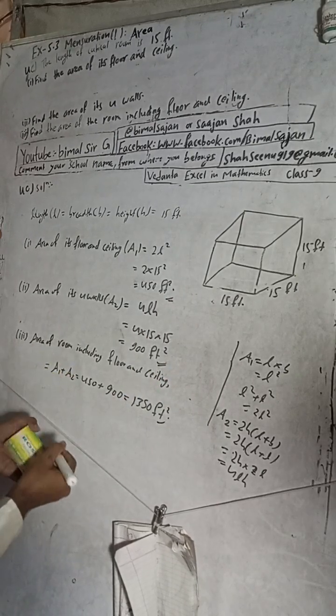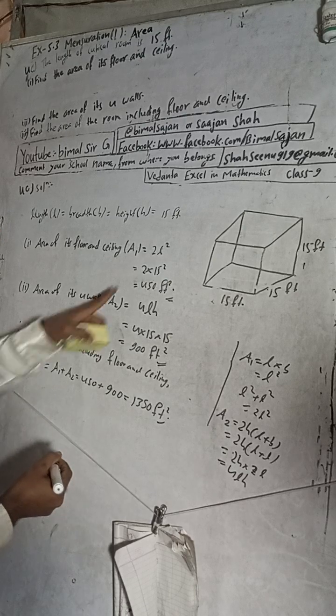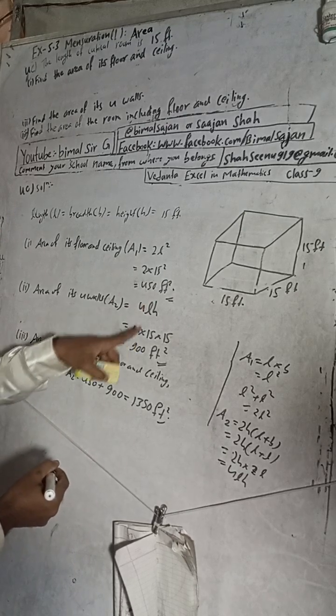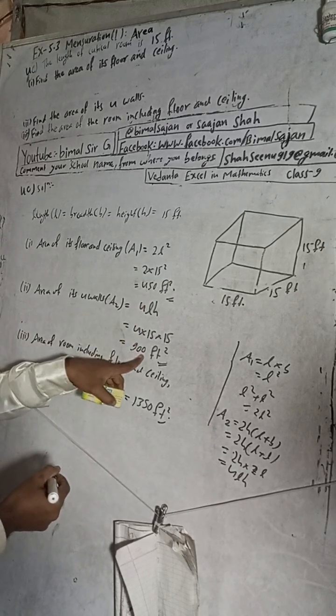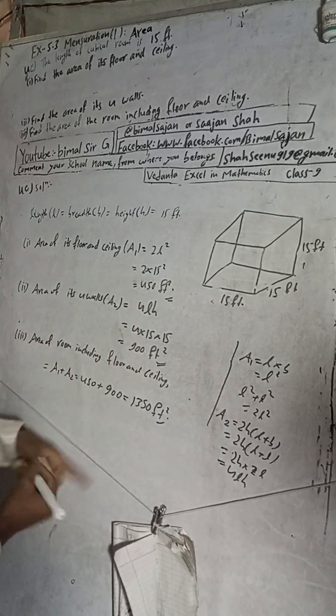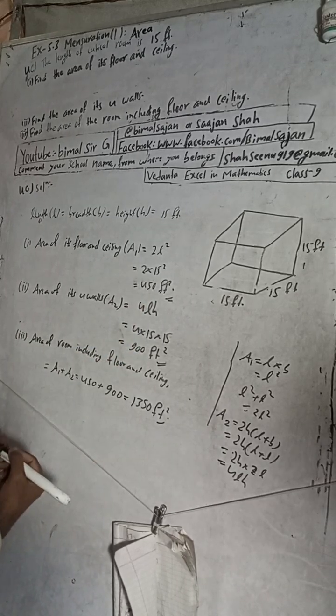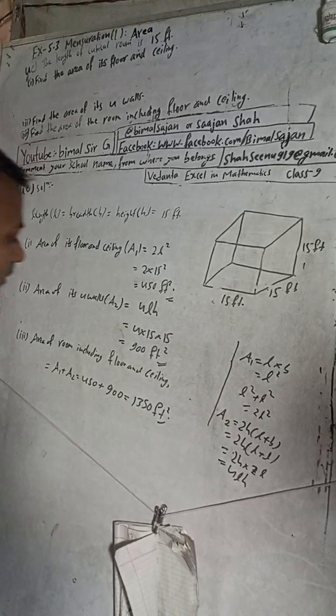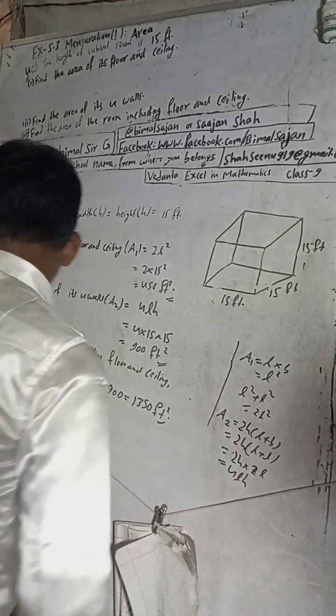The answers in the book are given as: 450, 900, and 1350. So this is the complete and required solution of this question.